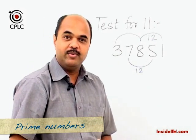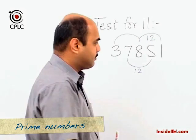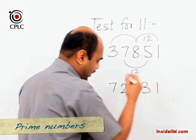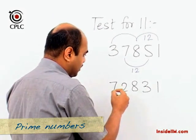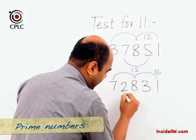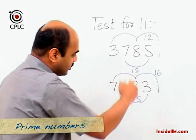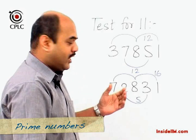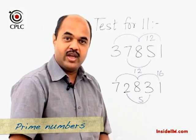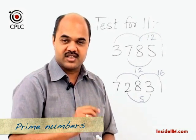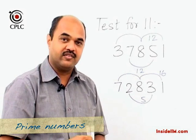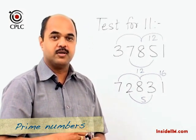Let's look at another example where the difference between the two sums is not zero: take the number 72831. The sum of alternate digits 7, 8, and 1 is 16, and the sum of the other alternate digits 2 and 3 is 5. The difference between these two sums is 11 — so this number is also divisible by 11. To recap: in the divisibility test for 11, we add up the alternate digits to get two sums, and if the difference between these two sums is either 0 or a multiple of 11, then the number is divisible by 11.